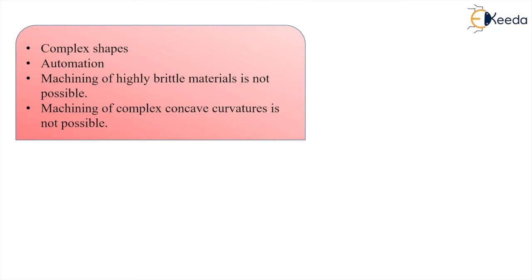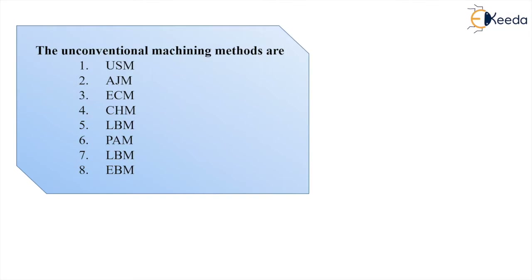Therefore we require new or non-traditional machining processes to do these jobs. The basic unconventional machining methods are: ultrasonic machining, abrasive jet machining, electrochemical machining, chemical machining, laser beam machining, plasma machining, and electron beam machining. We will see them one by one.